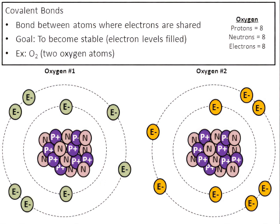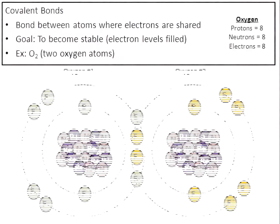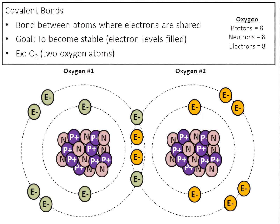When these two atoms are both unstable, they form a covalent bond — they overlap their electron levels and share their electrons. When you count up the electrons of oxygen number one: level one has two, it's stable. Level two has one, two, three, a shared fourth, a shared fifth, six, seven, eight. Level number two was once unstable, but it is now stable because of the sharing of electrons.